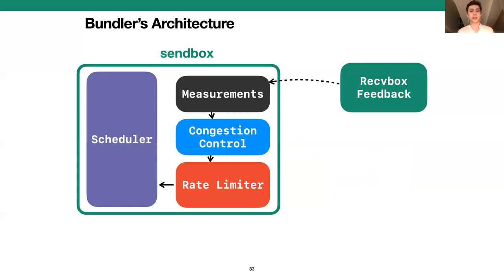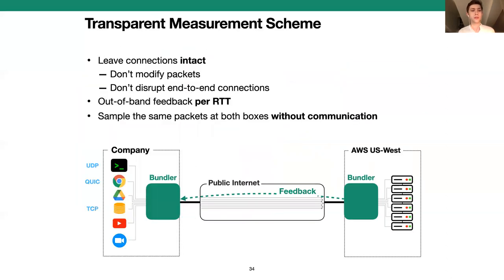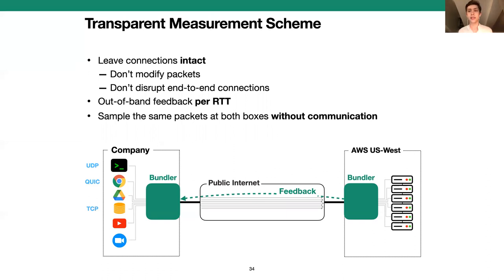The key component of Bundler's design is how it computes these measurements for congestion control. The contribution of Bundler's scheme is that it's lightweight and transparent — both the send and receive boxes forward traffic along without modifying the packets or disrupting the connections. To compute the measurements, the send box periodically samples packets to measure, and then the receive box sends feedback for these packets out of band from the data packets. For now I'll just present the key idea: instead of the send box explicitly communicating which packets it wants to sample — which would require packet modification — both boxes use the same hashing scheme that lets them independently pick the same packets to sample at random.